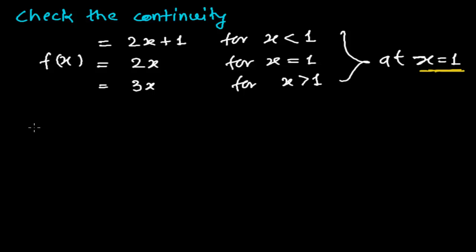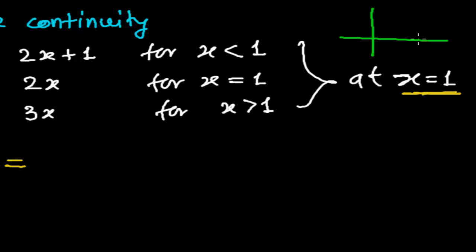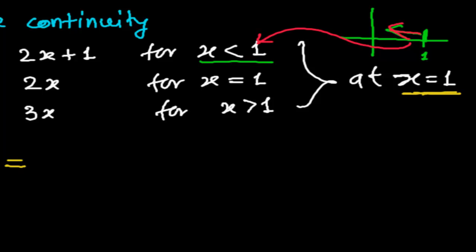Let me first find the left hand limit. So: limit as x tends to 1 minus of f(x). Since we are approaching from the left, x is less than 1. Let me draw something here — this is 1 on the number line, and for all values less than 1 we will use the corresponding piece of the function.